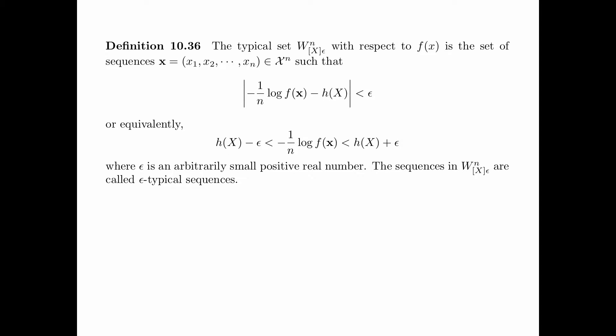Definition 10.36 is the definition of the typical set and typical sequences. Again, this definition is exactly the same as its discrete analog, except that we now have the probability density function in place of the probability, and the differential entropy in place of the discrete entropy.